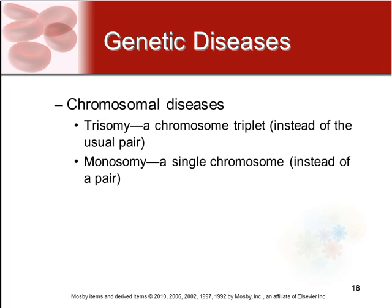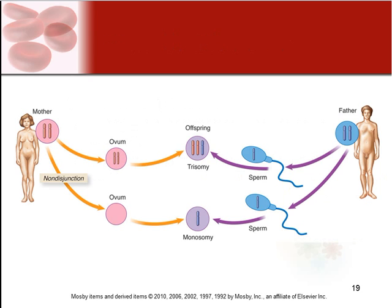Examples of chromosomal diseases are trisomy and monosomy. Trisomy is when there's a chromosome triplet instead of a pair. Monosomy is when there's a single chromosome instead of a pair. For example, if mom produces two chromosomes instead of one because they didn't separate and dad submits the normal one, that creates trisomy. Or if disjunction occurred and the chromosome couldn't pass forward, and dad submits his one, that creates monosomy — only one chromosome instead of two.